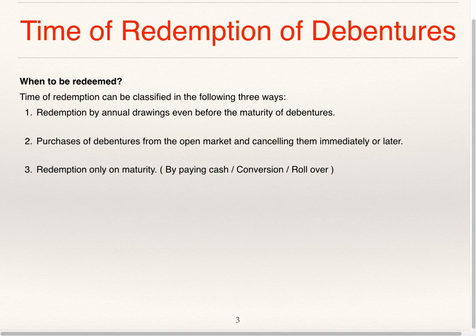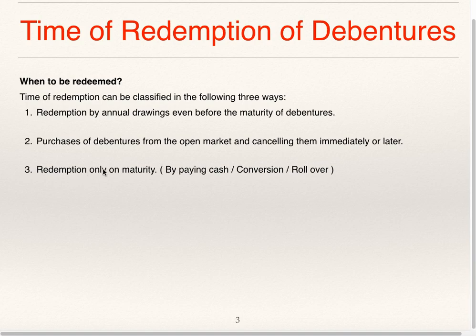We will see the time of redemption of debentures, i.e. when debentures are to be redeemed. Time of redemption can be classified in the following three ways. First, redemption by annual drawings even before the maturity of debentures. Second, purchase of debentures from the open market and cancelling them immediately or later. Third, redemption only on maturity by paying cash, conversion or rollover.